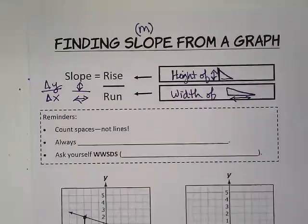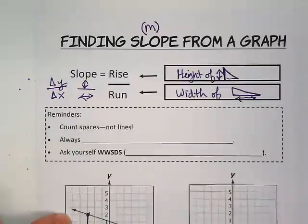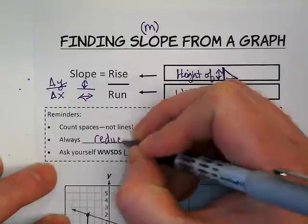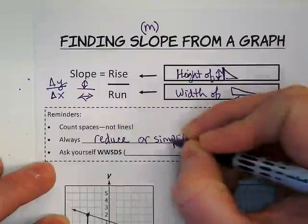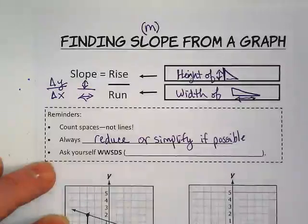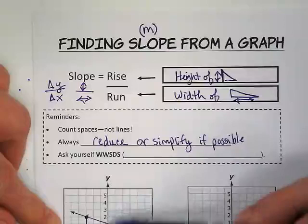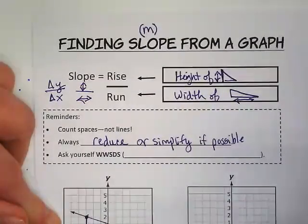So when we're looking for slope from a graph, we want to count spaces and not lines. You'll see what I mean by that when we start going down onto the graph and counting our pathway. You always want to reduce or simplify if possible. So if I end up with a slope that might be four over eight, I might look and see if there was another point on the graph that might be able to be reduced.